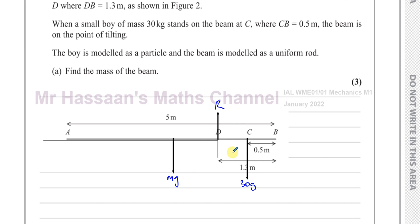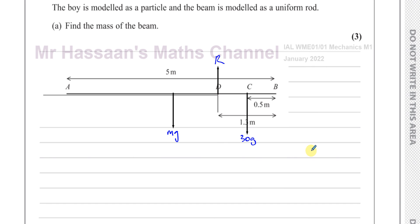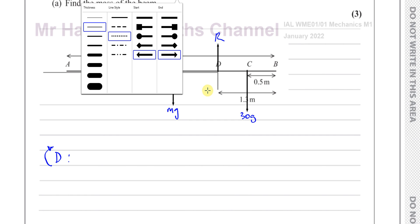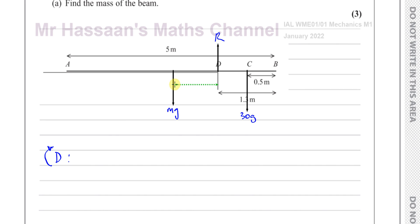We need to find the mass of the beam, so we can take moments. Taking moments about D is the sensible approach because we don't know the value of the reaction force and can't find it since we don't know mg. Taking moments about D eliminates the reaction force R from the equation, as the force acts through D and its moment about D is zero. We need to find the distances of the forces from D.